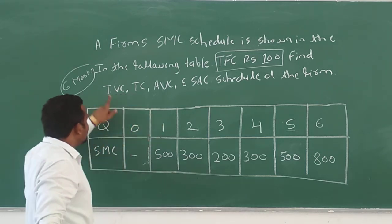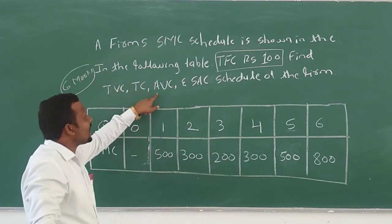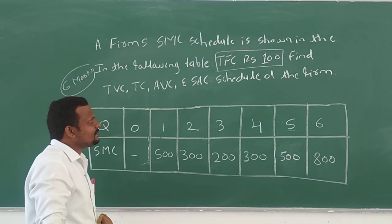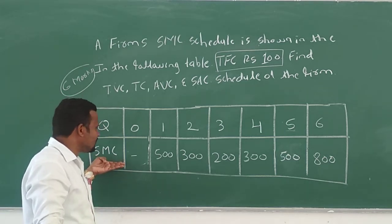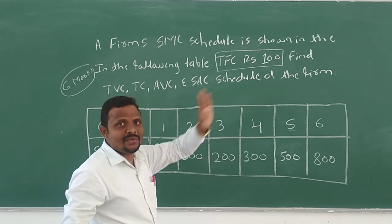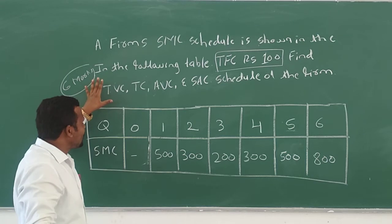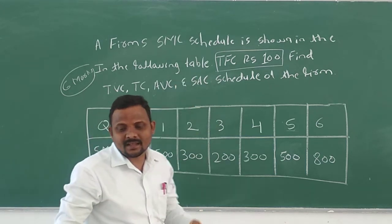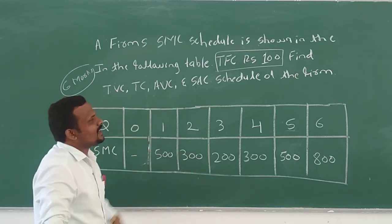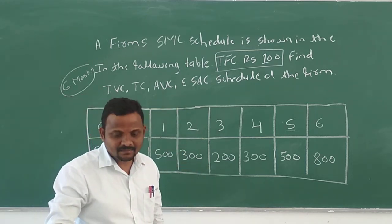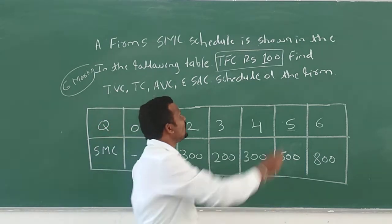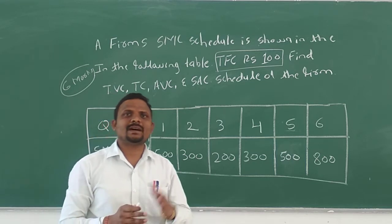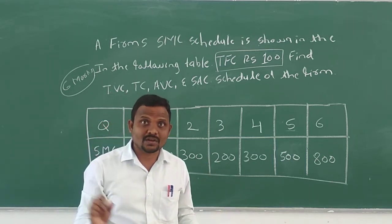Then we have TVC — total variable cost — TC — total cost — AVC — average variable cost — and SAC — short-term average cost — schedule of the firm. Given the short-term marginal cost and the total fixed cost, we have to find out the total variable cost, total cost, average variable cost, and short-term average cost.